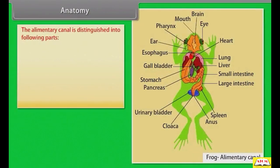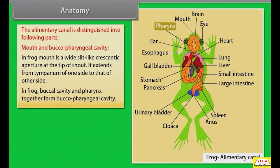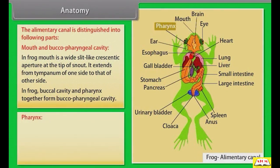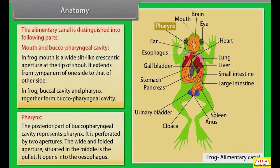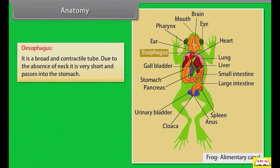The alimentary canal of frog is distinguished into: mouth and buccophaaryngeal cavity. In frog, the mouth is a wide, slit-like crescentic aperture at the tip of the snout, extending from the tympanum of one side to that of the other. The buccal cavity and pharynx together form the buccopharyngeal cavity. The posterior part of the buccopharyngeal cavity represents the pharynx, perforated by two apertures — the gullet opens into the oesophagus. The oesophagus is a broad and contractile tube; due to the absence of a neck, it is very short and passes into the stomach.